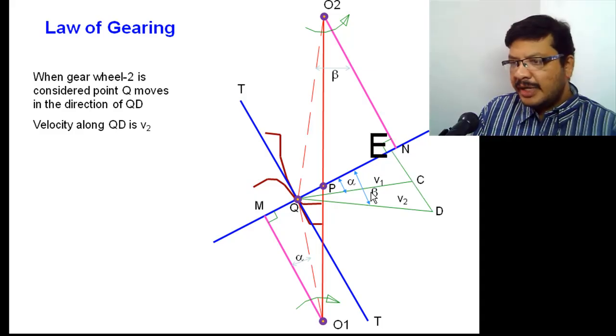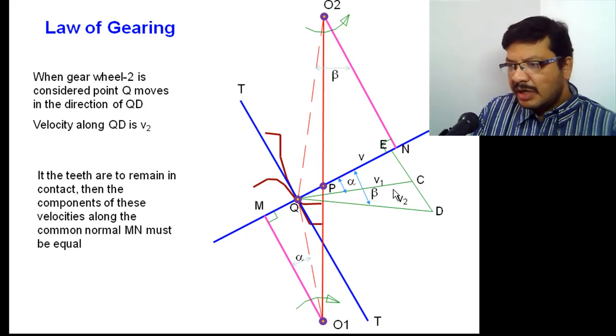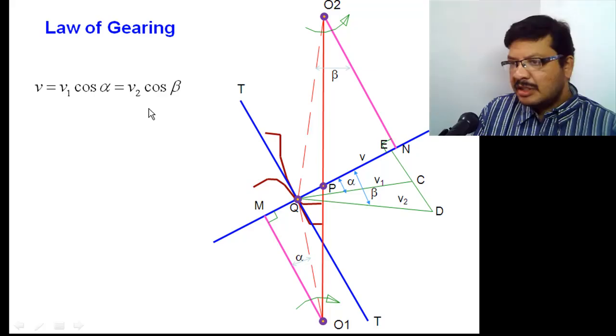In order to obtain the constant velocity, the components of V1 and V2 along the common normal must be same. That velocity I am assuming as V. The component of V1 along common normal must be equal to V. The component of velocity V2 along the common normal must be equal to V. V equal to V1 cos α, that is equal to V2 cos β.